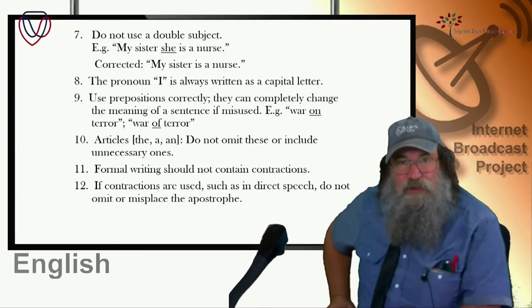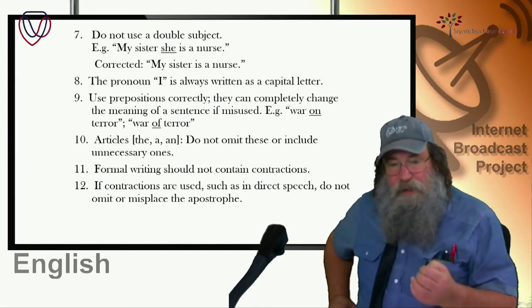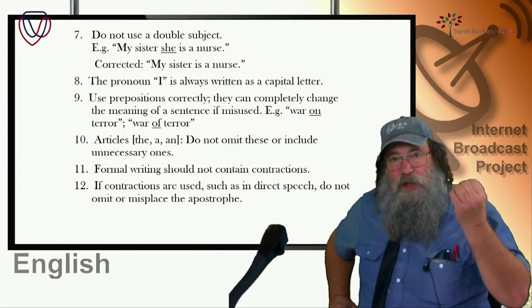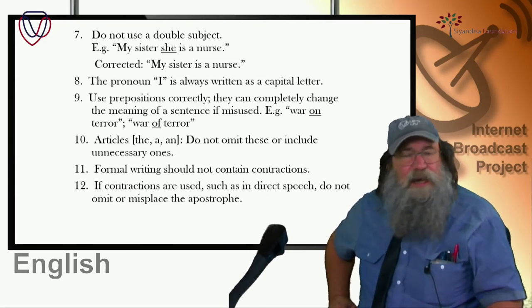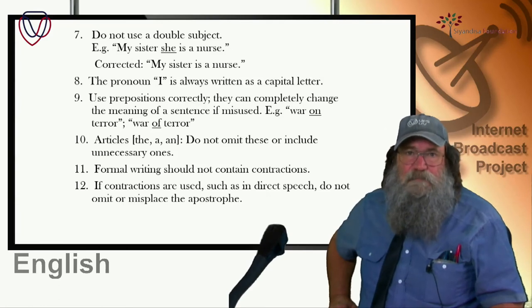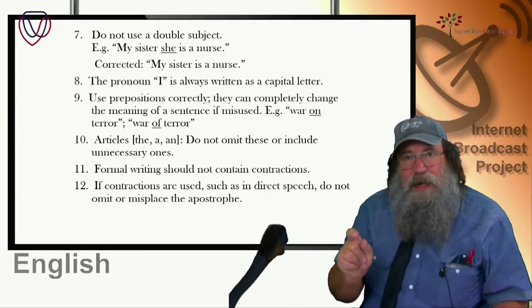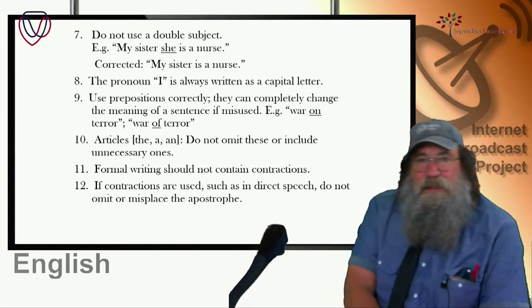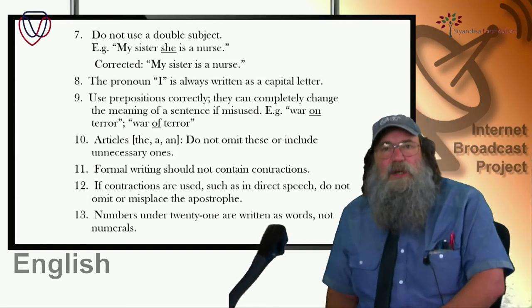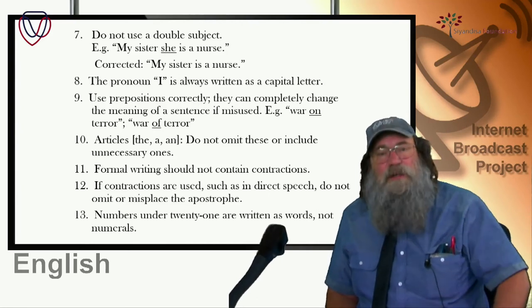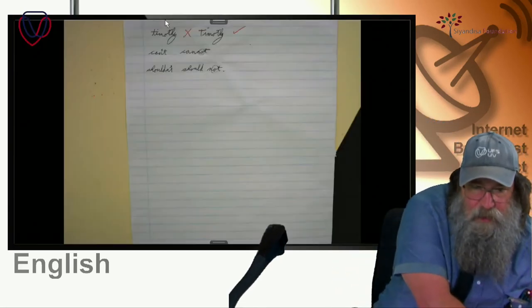If contractions are used — such as in direct speech — do not omit or misplace the apostrophe. Make sure you use an apostrophe and put it in the correct place. The apostrophe always comes where the vowel has been omitted. Numbers under 21 are written as words, not numerals — 21 and above, no problem, you can write them as numerals. So if in an essay you've written '12' using numerals, that is a language error — it should be written as the word 'twelve'.